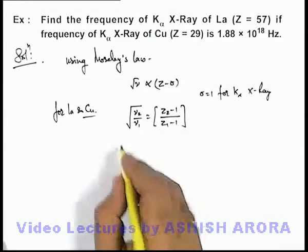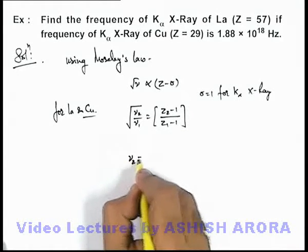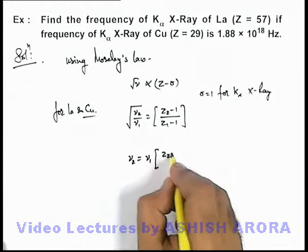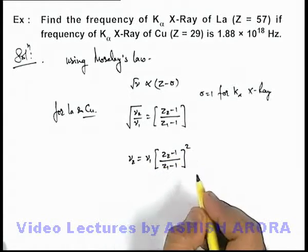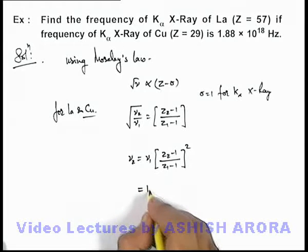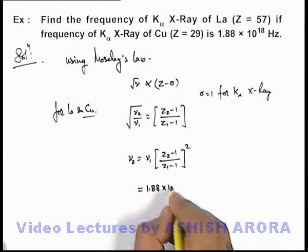So here directly we can get the value of nu 2 as nu 1 multiplied by z 2 minus 1 by z 1 minus 1 whole square. So on substituting the values it'll be 1.88 into 10 to power 18